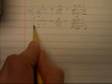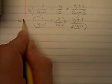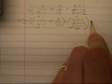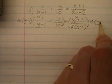And the LCD of 10 and 2 is 10, and I have a binomial factor of y minus 1, so I'm going to multiply both sides, both the left hand side and the right hand side by the LCD, which is 10 times the quantity y minus 1.